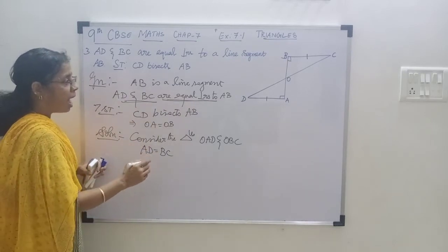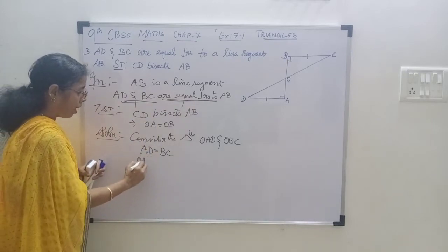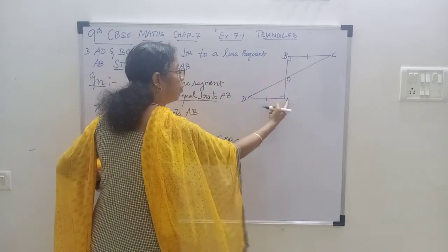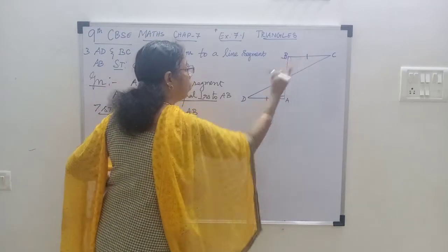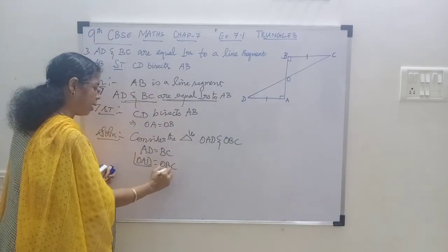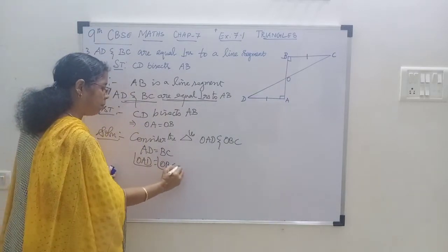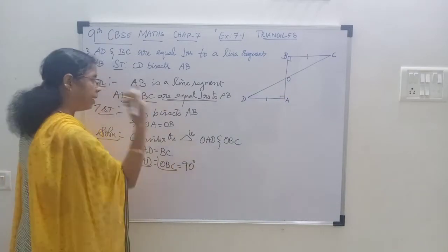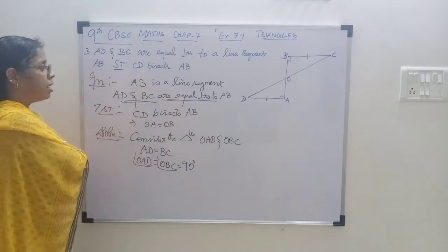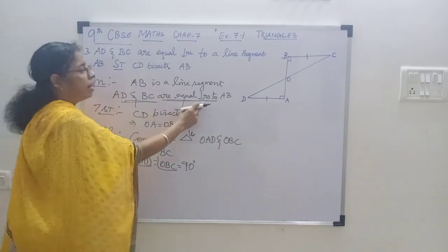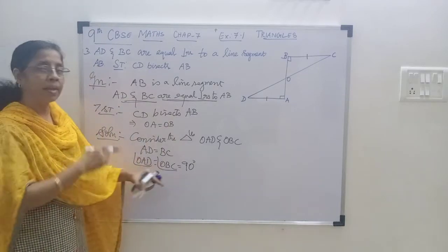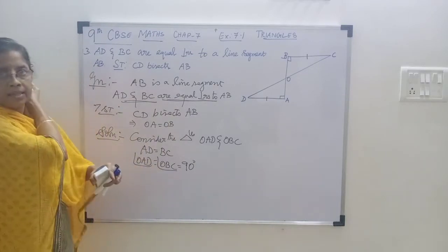Then, angle OAD is equal to angle OBC. Both are equal to 90 degrees because AD and BC are the perpendiculars, so they make 90 degrees.